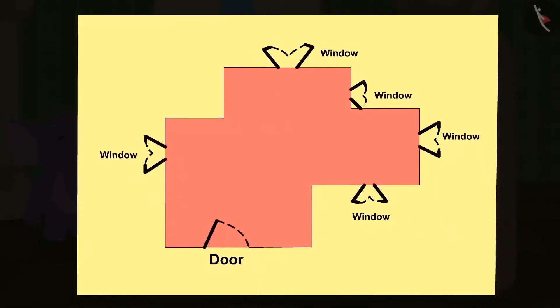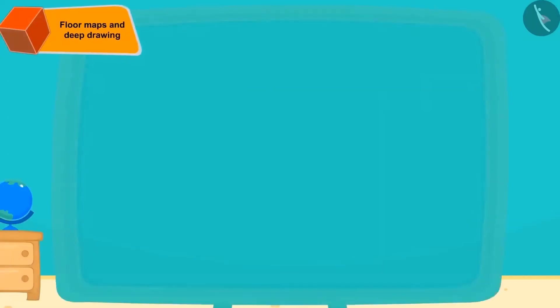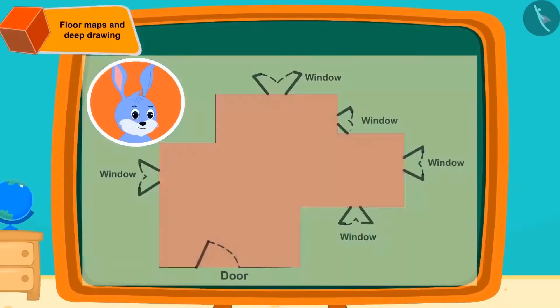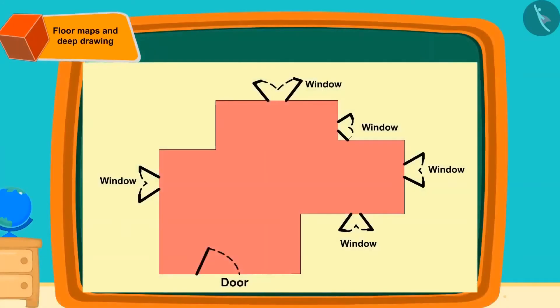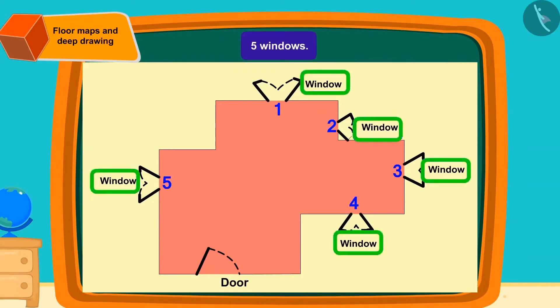The floor map looked like this. Kids, do you know about a map of the floor? From the map of the floor of a room or house, we can find out where the windows and doors are in it. Can you tell by looking at the map of the floor how many windows are there? Yes, the floor map has five windows.